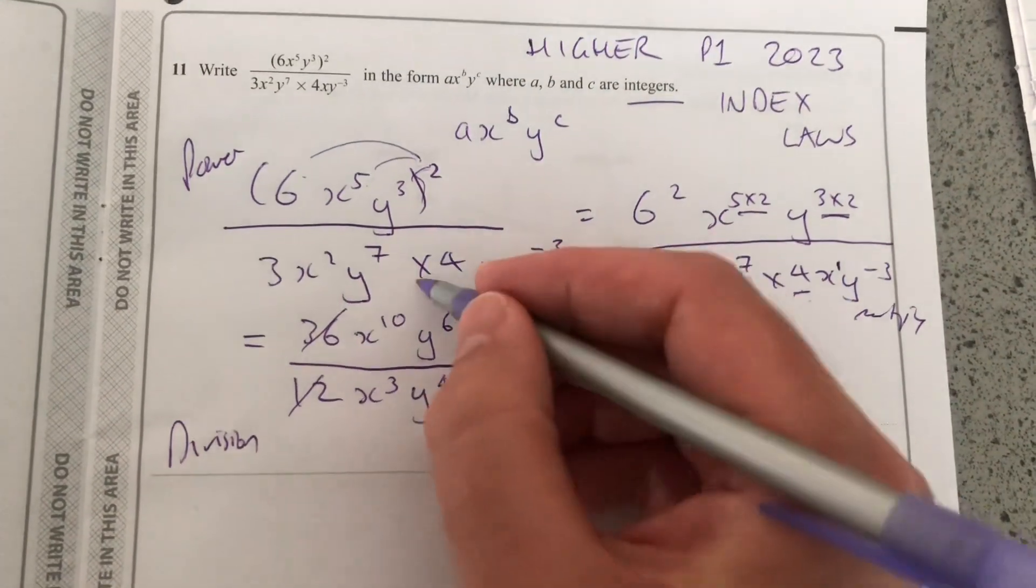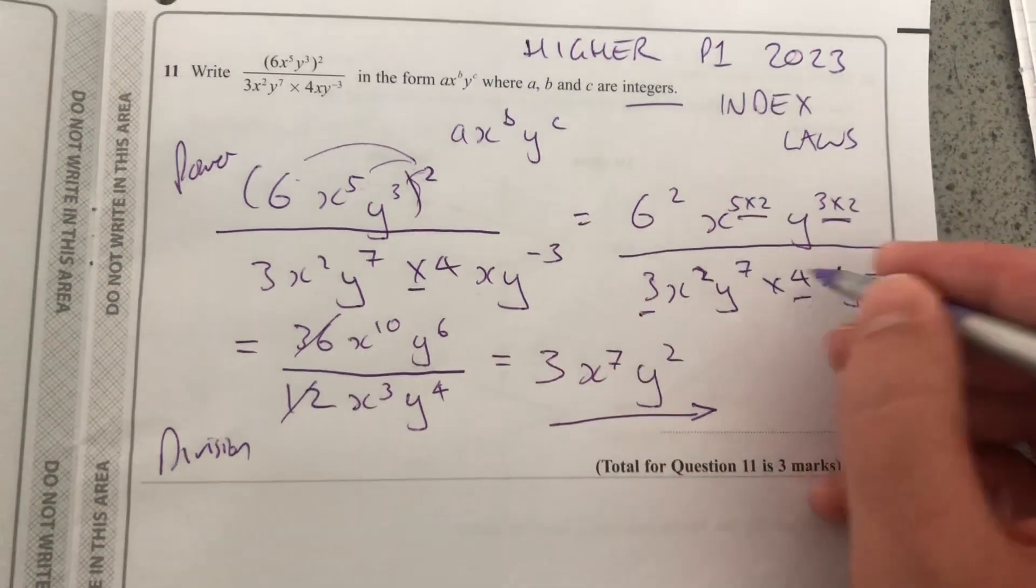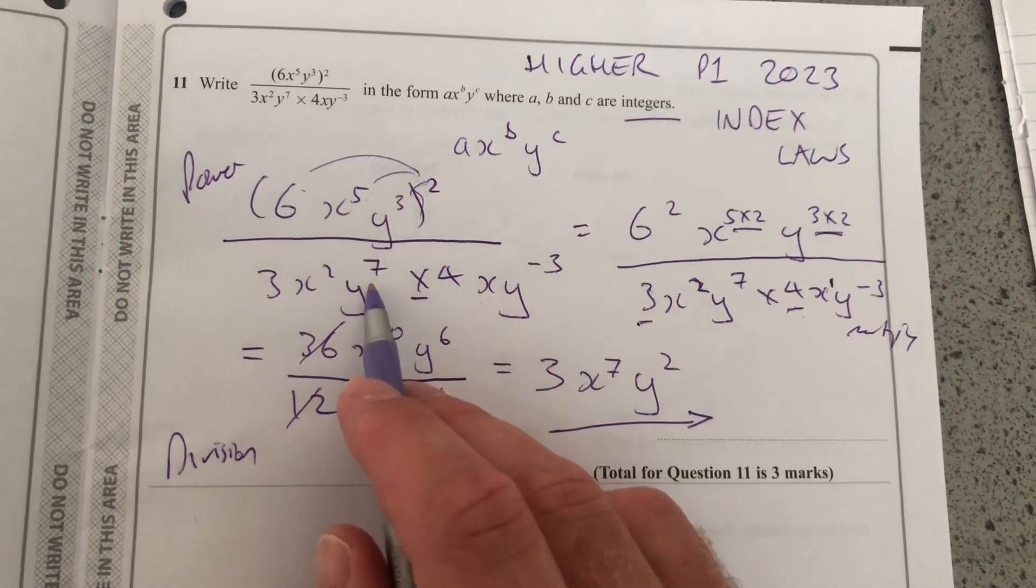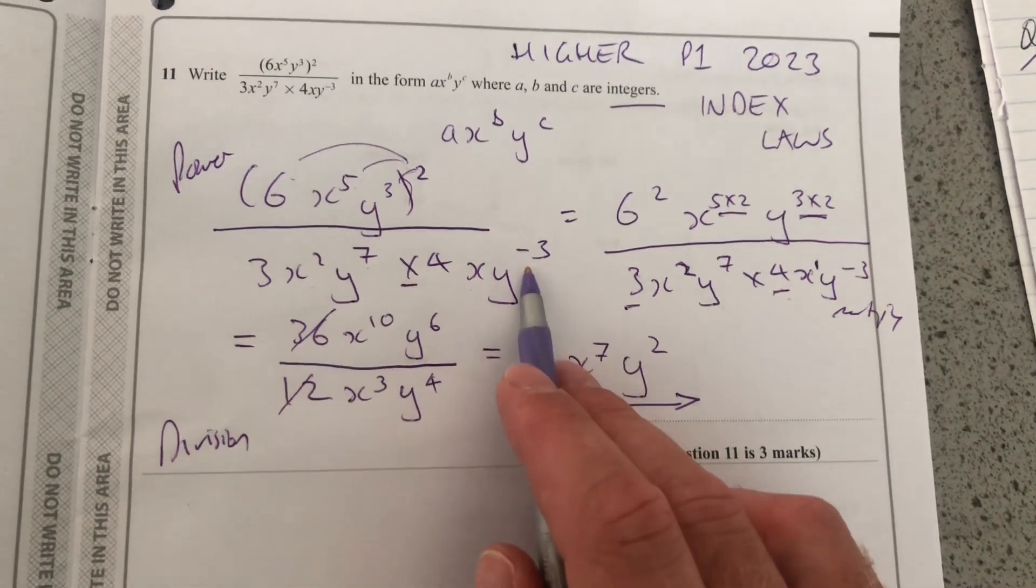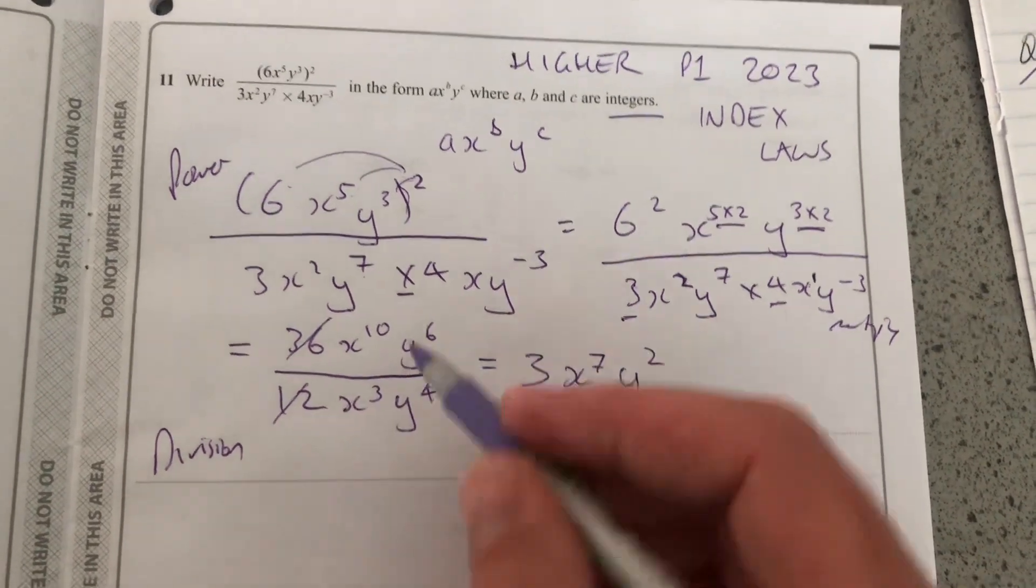Then when you multiply bases, you add the powers. So 2 plus 1 is 3. 7 plus minus 3 is 4. And then we divide.